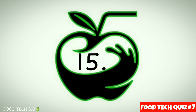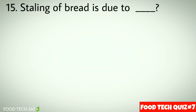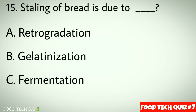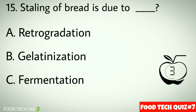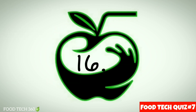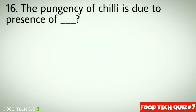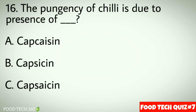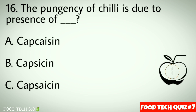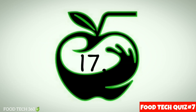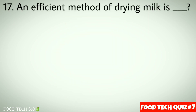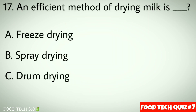Question number 15: Staling of bread is due to — options: a) Retrogradation, b) Gelatinization, c) Fermentation. Correct answer: a) Retrogradation. Question number 16: The pungency of chili is due to the presence of — options: a) Capsaicin, b) Capsaicin, c) Capsaicin. Correct answer: c) Capsaicin.